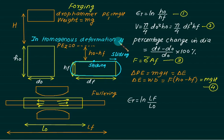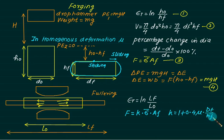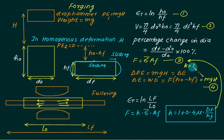When friction coefficient μ is present, the force formula must be modified. Force considering friction equals K × σ_average × A_final, where K = 1 + 0.4 × μ × (DF / HF). When μ equals zero, K equals 1, so the factor does not appear in the frictionless case.